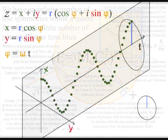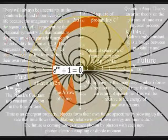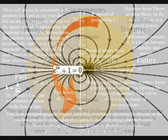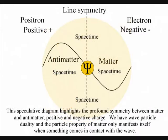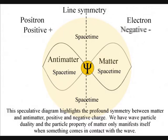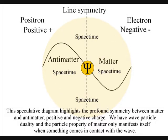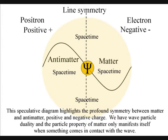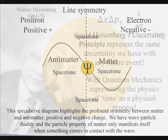At each photon-electron coupling, or dipole moment, the profound symmetry between matter and antimatter is broken, with the annihilation of antimatter. The annihilation of the antimatter represents the past, with the emission of a new photon representing the future, with Heisenberg's uncertainty principle representing the same uncertainty we have with any future event at the smallest scale of the creative process.